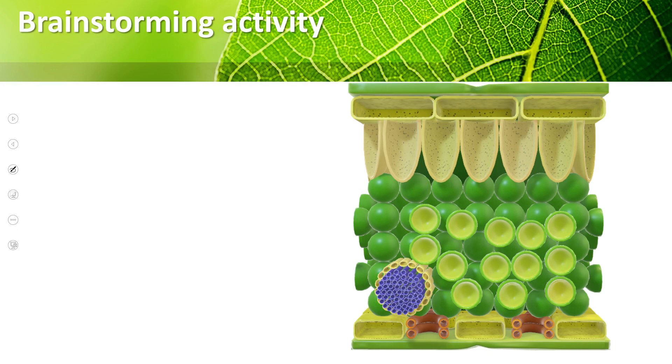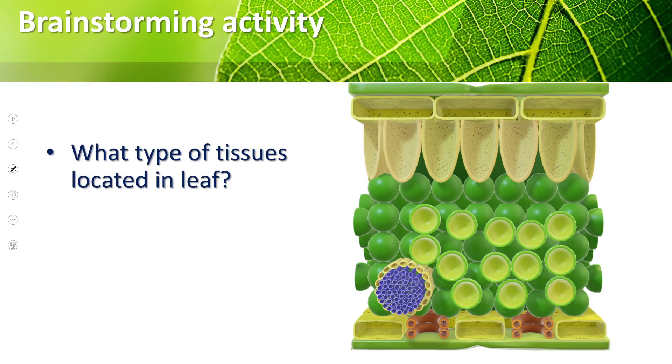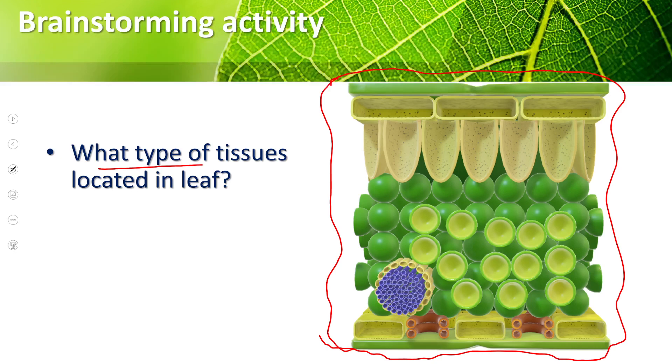First, we will do an activity. You will see a picture on the screen. You will be familiar with this picture. We have studied about tissues. This is a leaf. Let me quickly tell you what we have studied about leaf. What types of tissues are located in leaf?